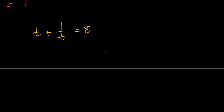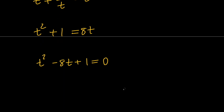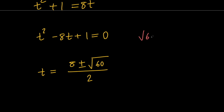So we can say t plus 1 over t equals 8. Let's solve for t. Multiplying both sides by t gives t squared plus 1 equals 8t, which gives us t squared minus 8t plus 1 equals 0. Using the quadratic formula, t equals 8 plus or minus the square root of 64 minus 4, which is 60, all divided by 2. Notice that the square root of 60 equals the square root of 4 times the square root of 15, which equals 2 root 15.